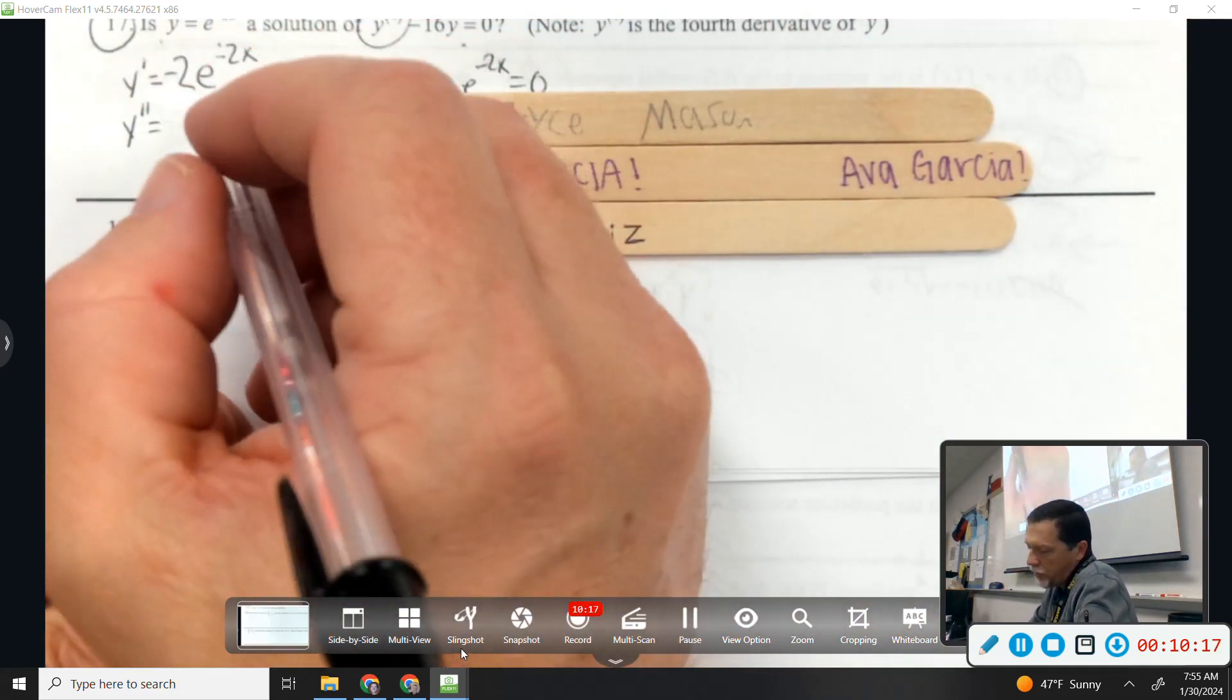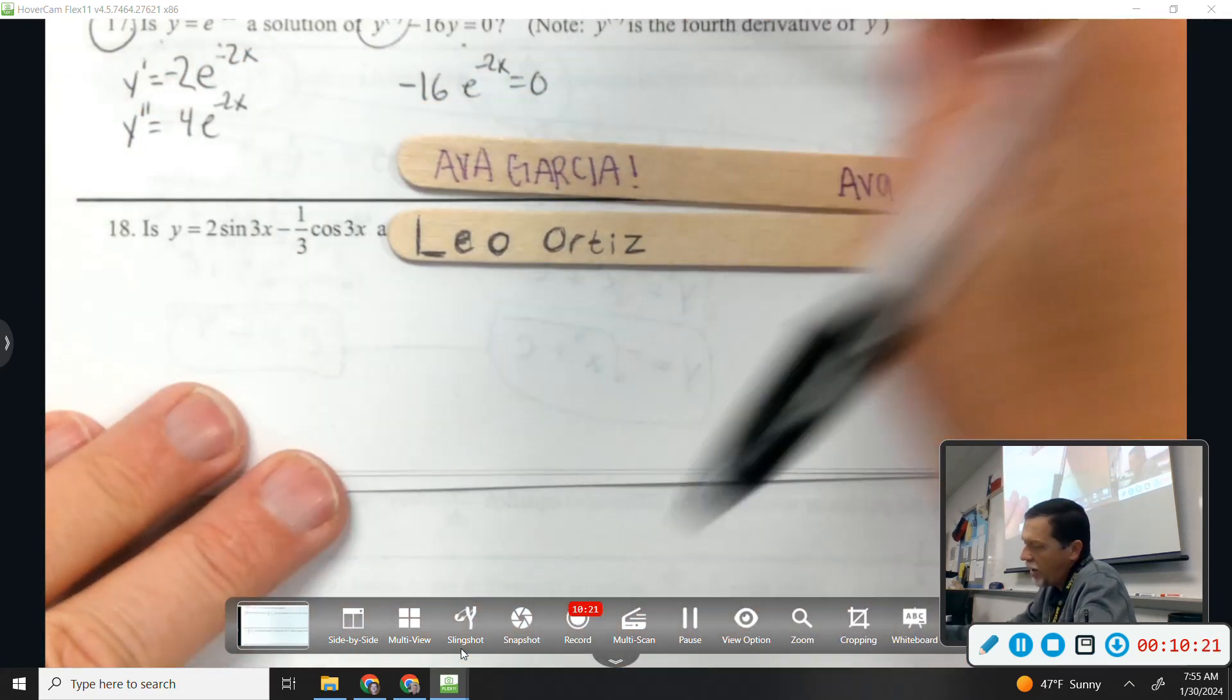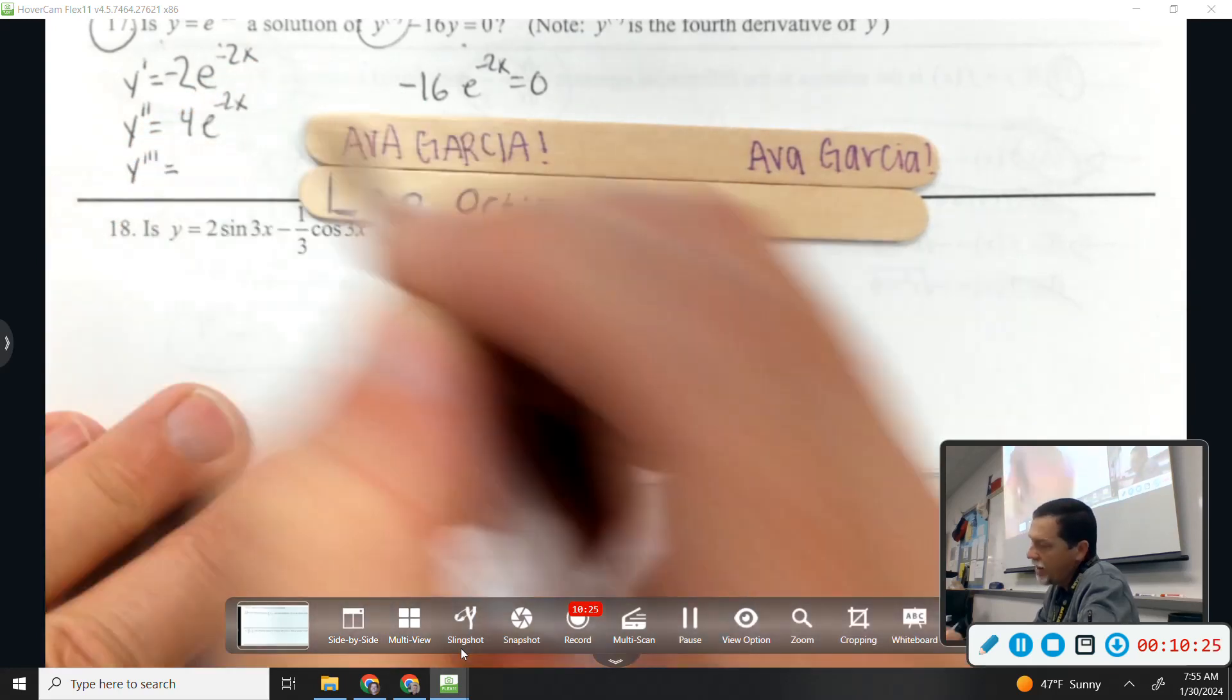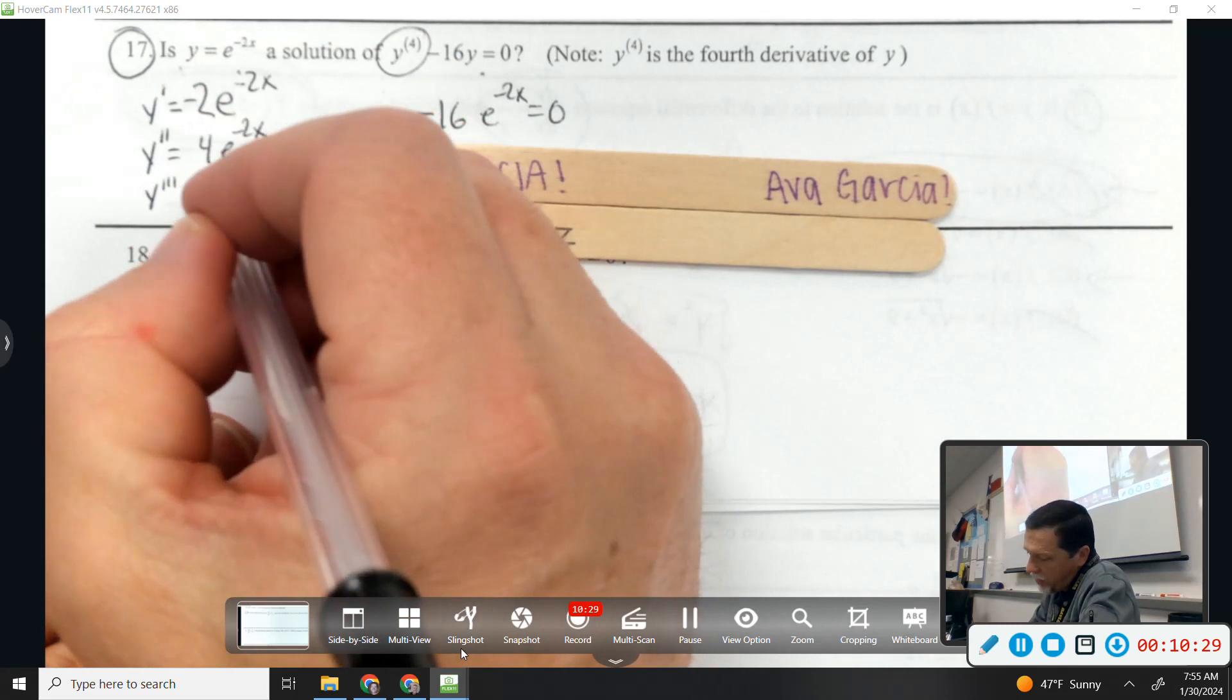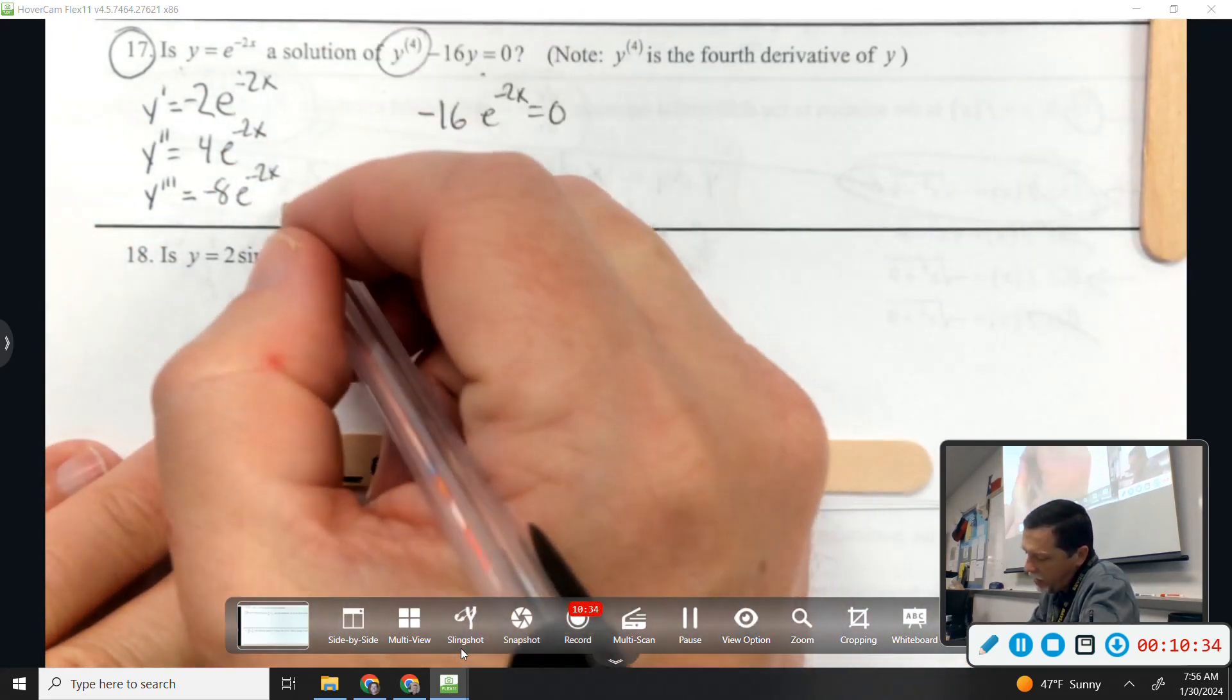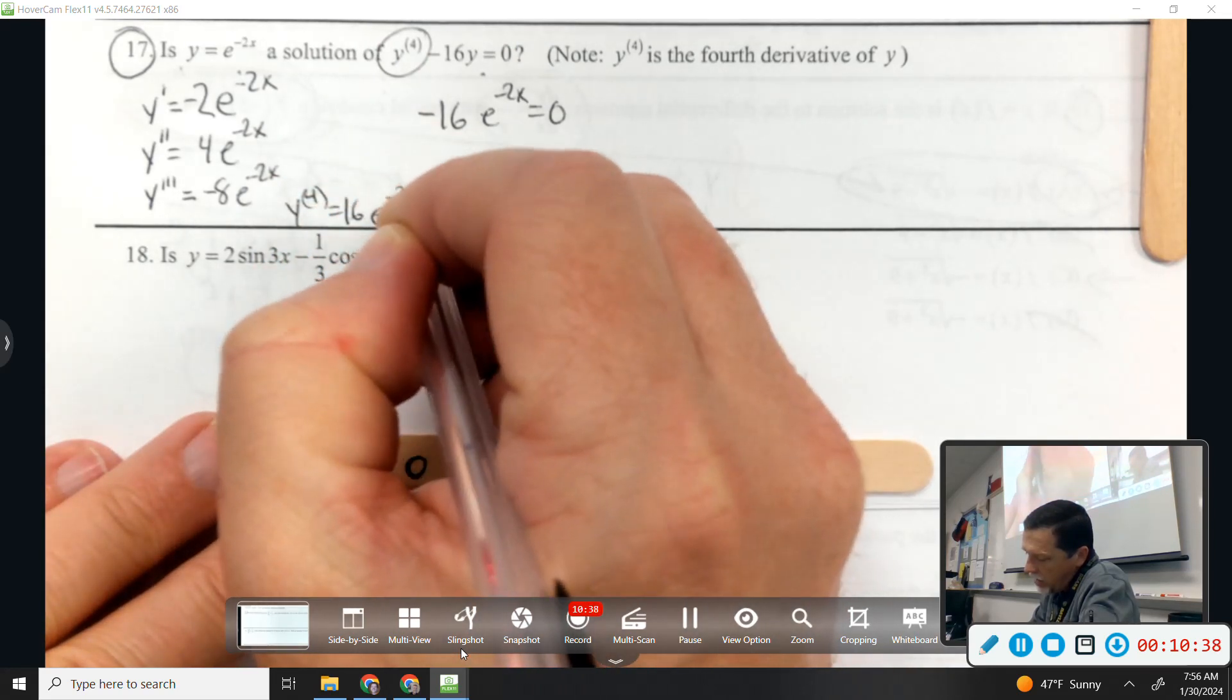Bryce, how about the second derivative? 4e to the negative 2x. Good. Start to see a pattern here in a minute. Ava, the third derivative? Negative 8e to the negative 2x. And Leo, the fourth derivative? 16e to the negative 2x. Yep. And so that's what goes in as the fourth derivative.